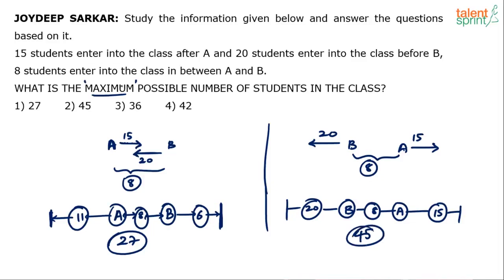Since the question asks for the maximum possible number of students in the class, the answer is 45. There are two possibilities: 27 or 45. The maximum is 45. If they had asked for the minimum possible number of students, the answer would be 27.